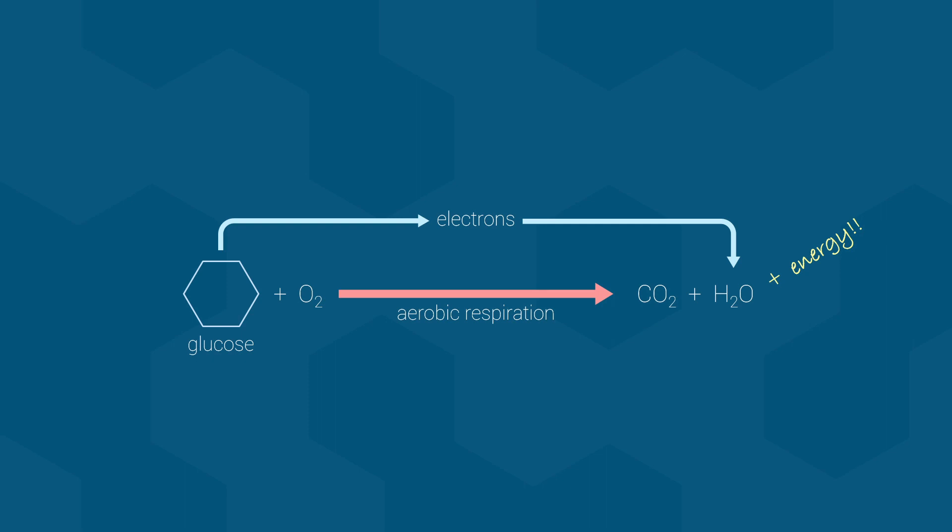But this begs the question: where do carbohydrates come from in the first place? When you stop to think about it, carbohydrates and indeed any nutrient had to start somewhere. Well, that somewhere is photosynthesis. Almost all nutrients across our planet originated in some form from carbon dioxide, water, and sunlight.